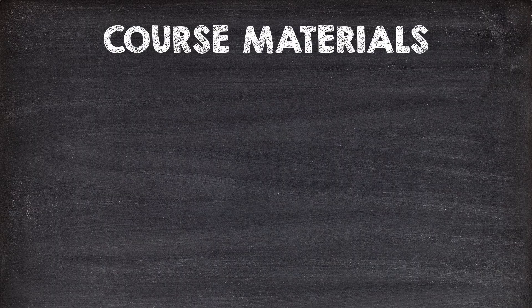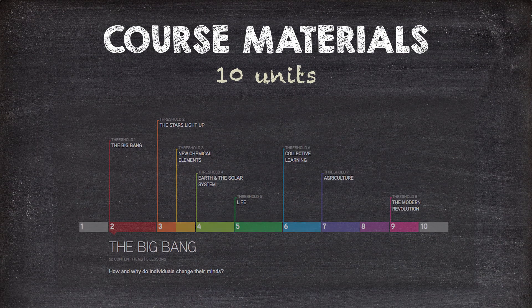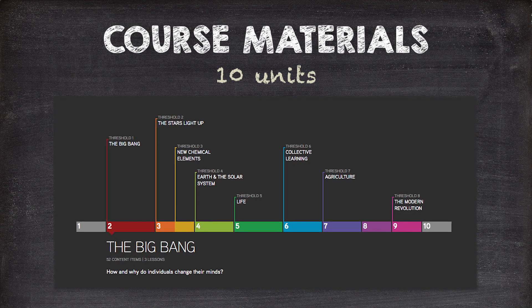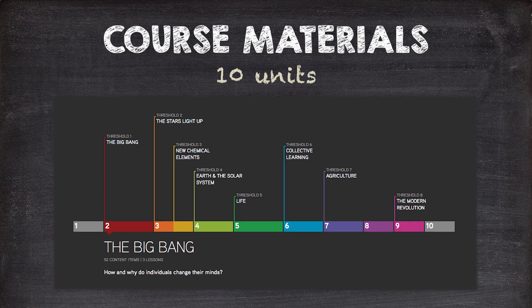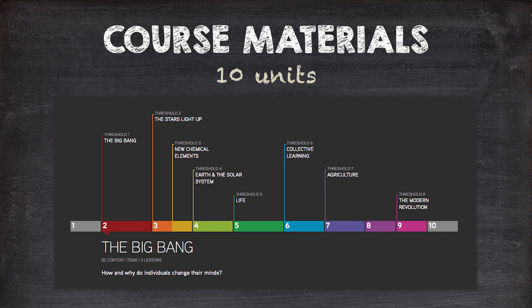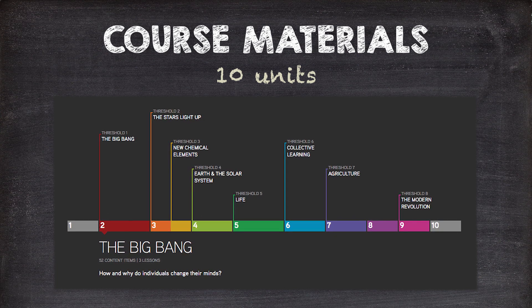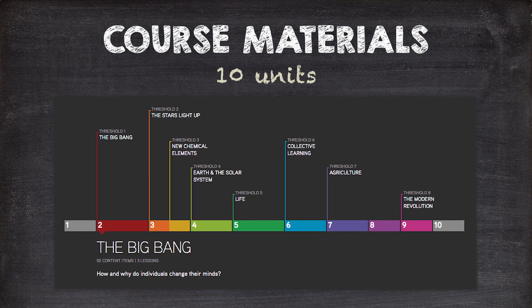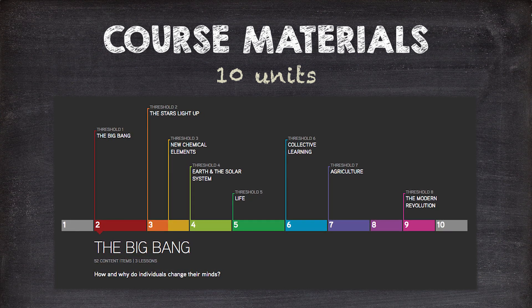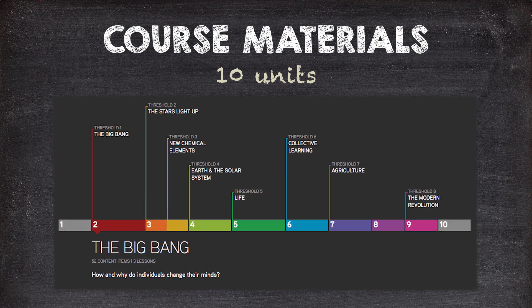The Big History Project tells the story of these eight thresholds over 10 units. So eight thresholds, 10 units. If you look at the timeline on the homepage of the school website, or if you do the maths, you'll notice that not every threshold has its own unit.